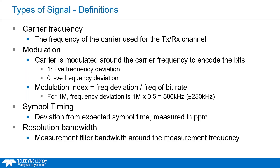Symbol timing is a deviation of a bit — encoding a bit stream into frequency modulations. The symbol timing is specifically a deviation from where a bit is expected to appear, measured in ppm or parts per million. Resolution bandwidth describes the width of a bandpass filter around the center measurement point, relevant for power measurements done on a spectrum analyzer or the TLF 3000.